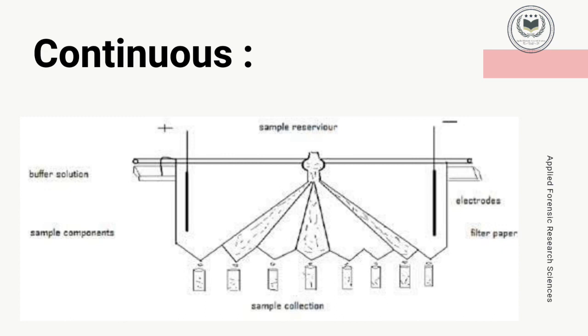In continuous paper electrophoresis, as shown in the diagram, buffer solutions are present at the two ends and a horizontal glass plate is present. Sample components are placed in multiple quantities so that the process of electrophoresis is continuous. Many samples can be processed on a single electrophoresis instrument.